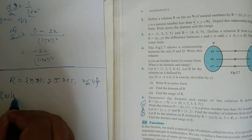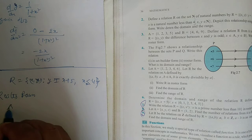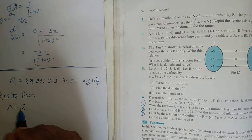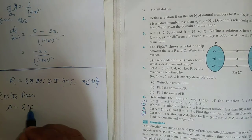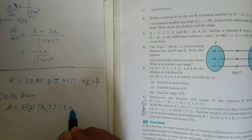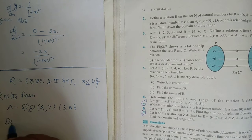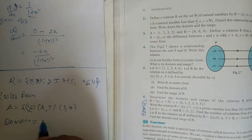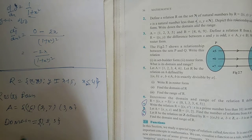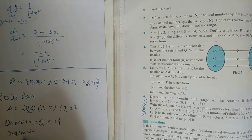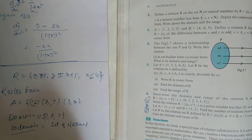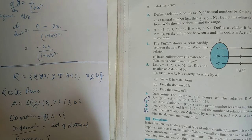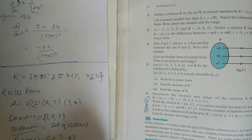First, the roster form: when x=1, y=6; when x=2, y=7; when x=3, y=8. So R = {(1,6), (2,7), (3,8)}. The domain is the set of first elements: {1, 2, 3}. The codomain is the set of natural numbers. The range is the set of second elements: {6, 7, 8}.